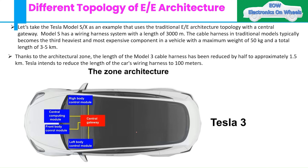The Tesla Model 3 uses three zone control units: the front body control module, left body control module, and right body control module. You can see this in the diagram showing how they are progressing toward the future.